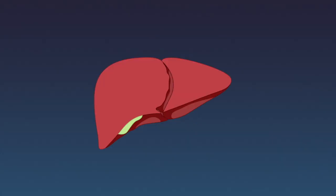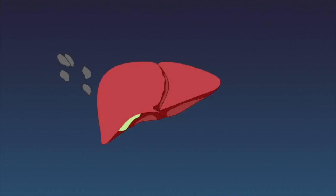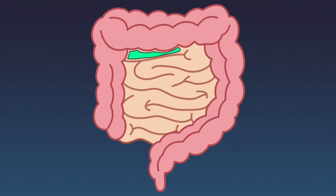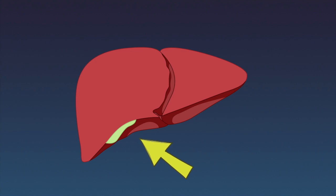Liver is a smart organ. It converts waste products into useful green juice called bile. Bile helps us digest food. The liver delivers the bile to the intestines through a small tube. Extra bile is stored in the gallbladder for immediate release whenever we eat. Number 4.